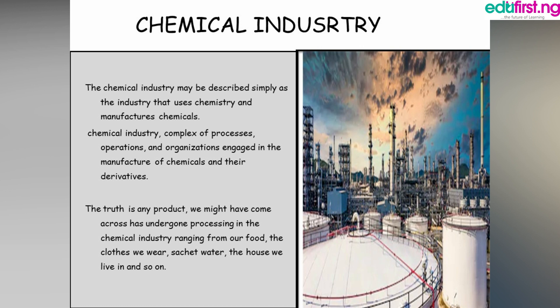The clothes we wear — one raw product is cotton gotten from the farm, which undergoes many processes to become clothing. Even sachet water undergoes purification processes using chemicals to kill germs. The houses we live in also involve chemical processes, from the roof to the doors. So any product we have come across has actually undergone processing in the chemical industry, which is a vital industry in any nation's economy.